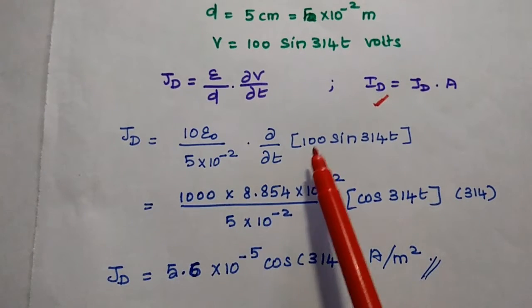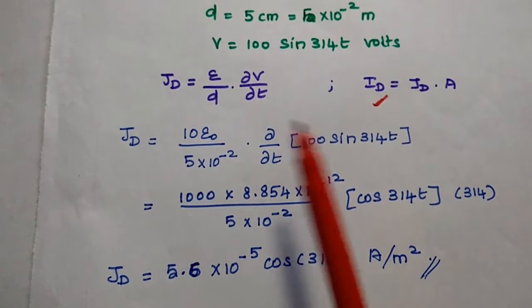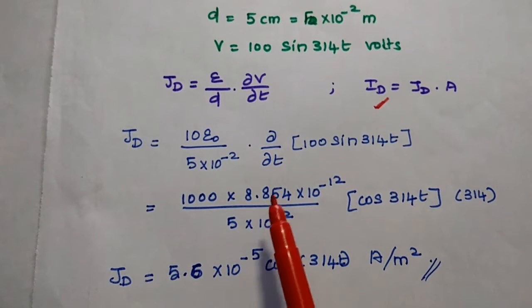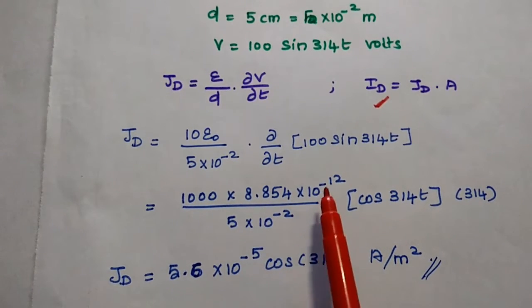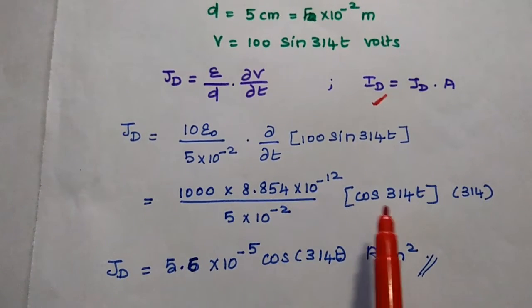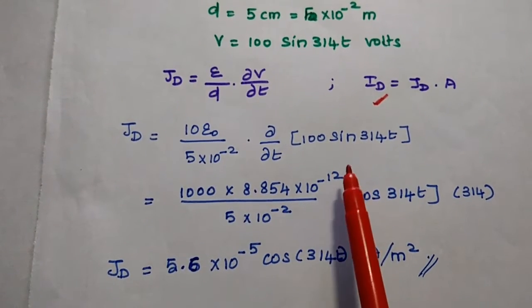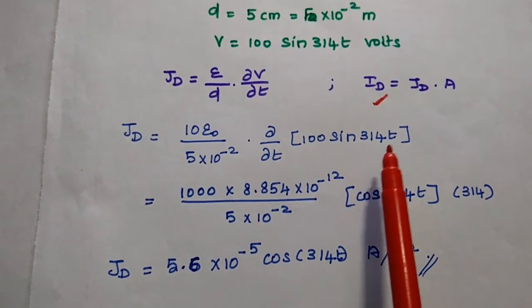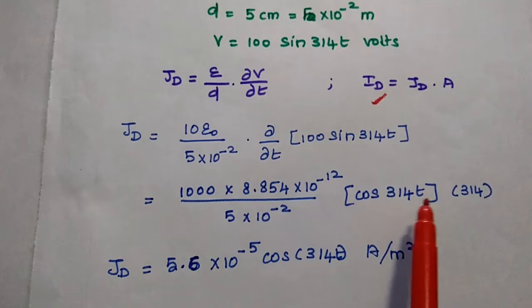Here we can take this 100 outside. So 10 into 100, 1000 into epsilon naught value is 8.854 into 10 to the power minus 12, divided by 5 into 10 to the power minus 2. The differentiation of sin is plus cos, so differentiation of sin 314T is cos 314T.